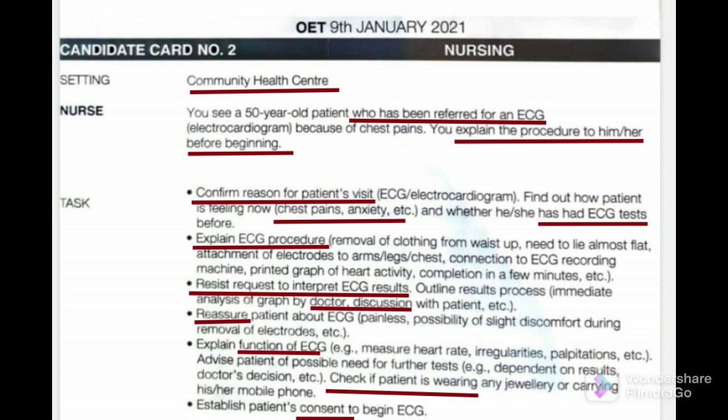The next one is the request — request to interpret ECG results, outline results process: immediate analysis of graph by doctor, discussion with the patient, etc. You can imagine that in that section there may be a question from the patient, so you can ask 'Do you have any concern?' The patient may tell you, 'After the procedure, will you explain me the result, sister?' Then you have to tell them that no, it comes from the doctor. Then: reassure patient about ECG being painless, possibility of slight discomfort during removal of electrodes, etc. Then the next one is explaining the function of ECG — underline 'function.' The last one: jewelry. And the last task is consent.